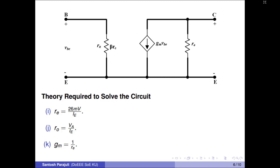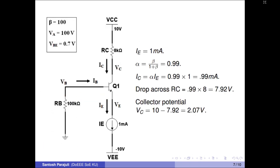The value of Re is 26 millivolts over quiescent emitter current. Ro is given by the ratio of early voltage to quiescent emitter current, and Gm is the inverse of Re. Gm, Re, and Ro are the small signal parameters of a transistor and are always operating point dependent. To find all branch currents and node potentials, let's start from the easiest: the emitter current is 1 milliampere, because there is a current source sinking 1 milliampere from the emitter node to the minus 10 volts battery. Assuming active region operation, collector current is also nearly 1 milliampere.